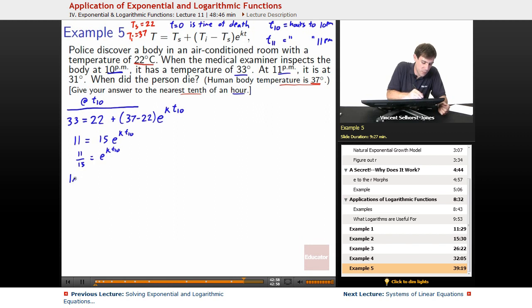Finally, we take the natural log of both sides, and we've got ln(11/15) equals k t_10. Now at this point, we go, shoot, there's two unknowns, and this is only one equation. Well, we're going to have to bring a little bit more information to the table.